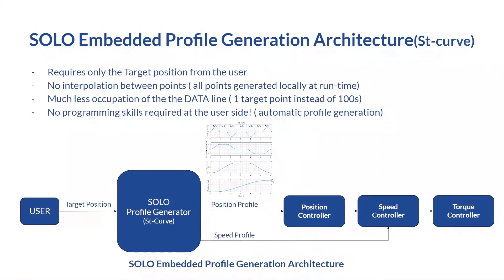To summarize, the differences between what SOLO offers as an embedded profile generation compared to conventional PVT methods come down to four points. First, it only requires one point from the user — no extra computation, just the target position. Second, there is no interpolation; every point is purely and exactly generated locally at runtime. Third, the data line is occupied much less because instead of sending hundreds or thousands of points, you only send one. Fourth, it needs very low or no programming skills — if you can send the target position using our tools or libraries, you are ready to go.